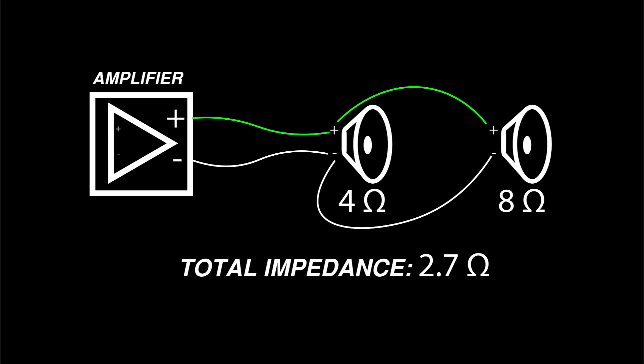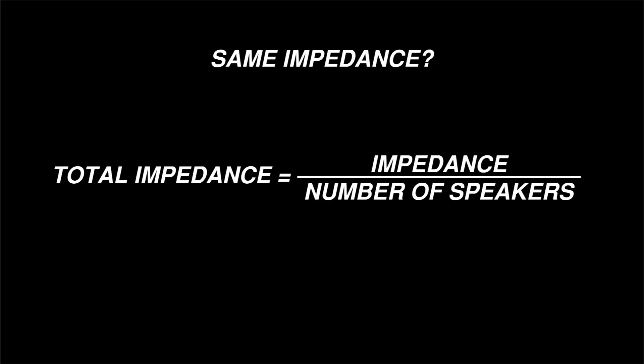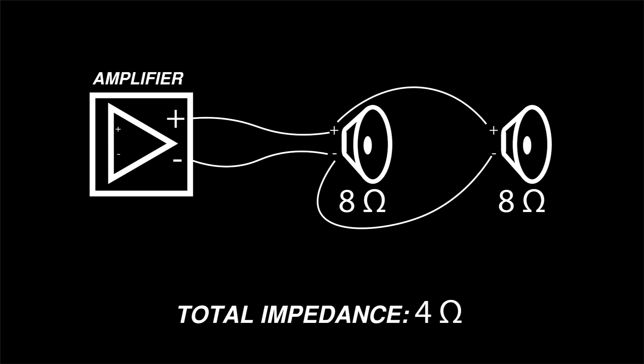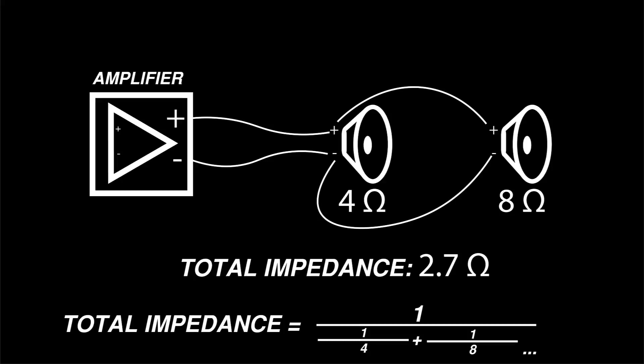The third scenario is multiple speakers connected in parallel. The positive amplifier terminal connects to the positive terminal of each speaker, and the negative amp terminal connects to the negative terminal of each speaker. If all of the speakers have the same nominal impedance, you can find the total impedance by dividing that impedance by the number of speakers. Two 8 ohm speakers in parallel equal 4 ohms — 8 ohms divided by 2 speakers. It's a bit more complicated when the nominal impedance of each speaker is different. An 8 ohm speaker and a 4 ohm speaker in parallel equals about 2.7 ohms.